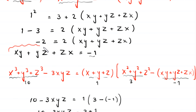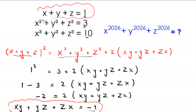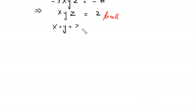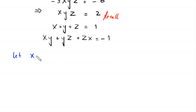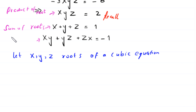We recall that xy + yz + zx = -1, x + y + z = 1, and xyz = 2. We suppose that x, y, and z are the roots of a cubic equation. Here, xyz is the product of roots, x+y+z is the sum of roots, and xy+yz+zx is the sum of products of roots two at a time.